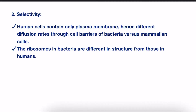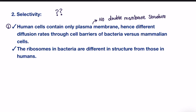Now comes the selectivity: how are these drugs able to recognize bacterial cells within our body and target them without inhibiting our own cells? The answer lies in two main reasons. First, human cells contain only a plasma membrane, so there is no double membrane structure, resulting in different diffusion rates through the cell barriers of bacteria versus human or mammalian cells. In bacteria, aminoglycosides diffuse more into the cell compared to human cells, so these drugs do not enter our cells as much as they enter bacteria.